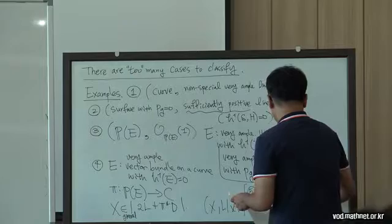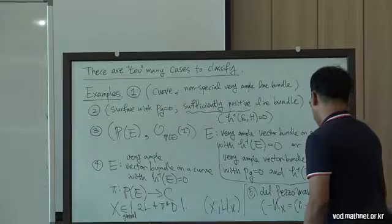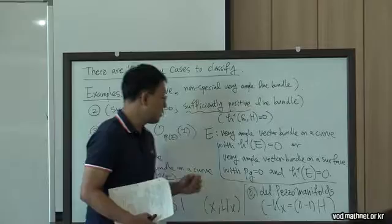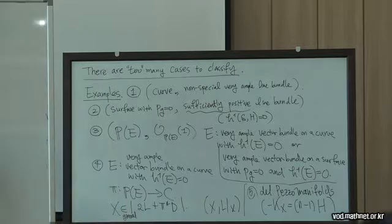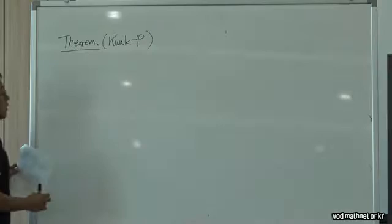Finally, the Del Pezzo manifold. In the smooth case, a Del Pezzo manifold means the anti-canonical divisor equals (N−1) times the hyperplane section. There is a complete classification of smooth Del Pezzo manifolds due to Fujita.